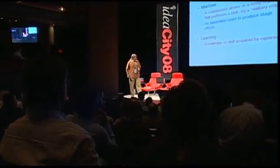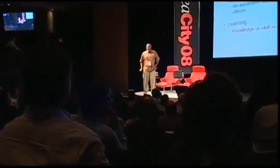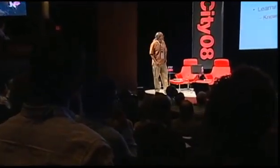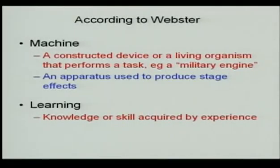So a machine is not just simply a device you can write down a mathematical equation to describe — there's some sort of magic behind it; you're kind of surprised to see what it can do. And learning? It's knowledge or skill acquired by experience. Put these two words together and you can see what a learning machine is: a device that has the ability to learn from experience.